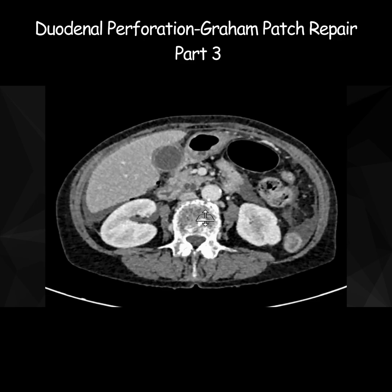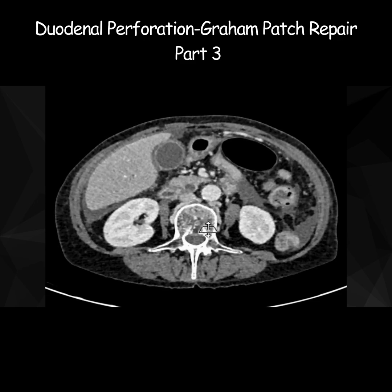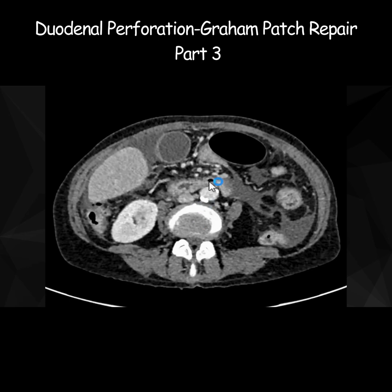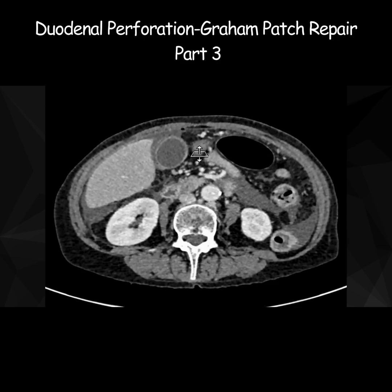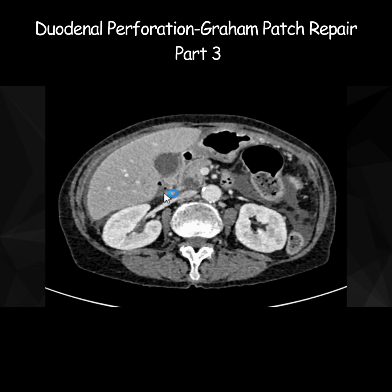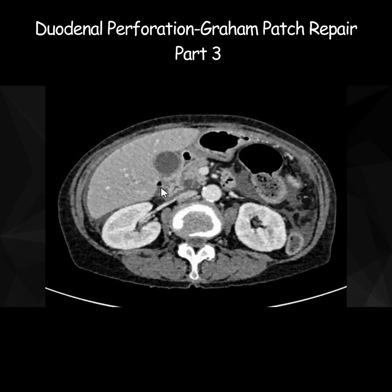I'll scroll down to make it a bit easier for you to understand. All of this is duodenum — this is the third part of the duodenum. There is a gas loculus here, but this is covered by mucosa; it's not perforated in this area. But if we go back to the level of D2, look at this area — there is a perforation here and then there is some gas outside.